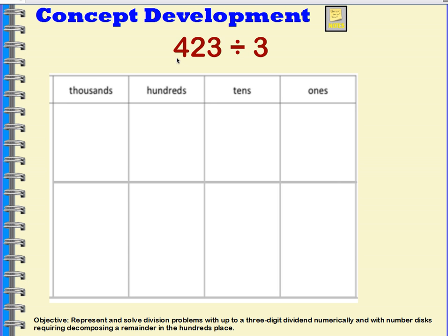We'll start by dividing 423 by 3. I'm going to show 423 on my place value chart — that means I have four hundreds, two tens, and three ones. Now I'm going to start with the hundreds and distribute them into three different groups.